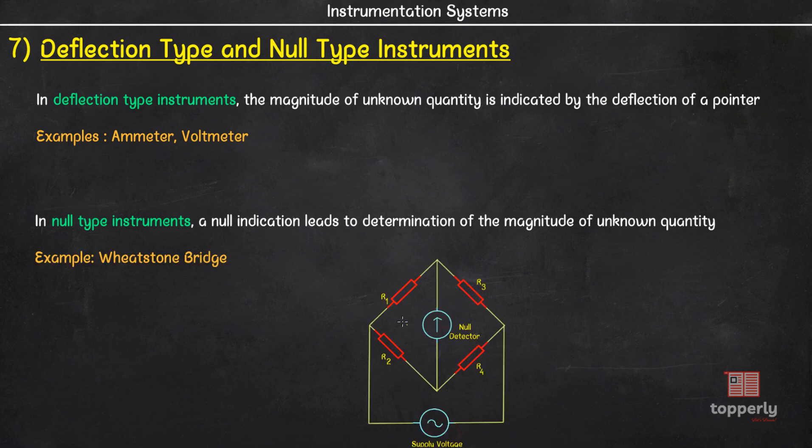Here, we connect the unknown resistance to one leg and adjust the resistances of the other leg so as to make the current through the galvanometer zero. Or in other words, we are nullifying the indication of the galvanometer. Also, please note that in cases where high accuracy of measurement is required, we use the null method.